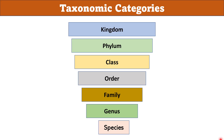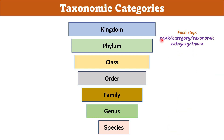Here we can see some steps: species, genus, family, order, class, phylum, and kingdom. Each step is called a rank, or a category, or a taxonomic category, or a taxon. All categories together are called taxonomic hierarchy.